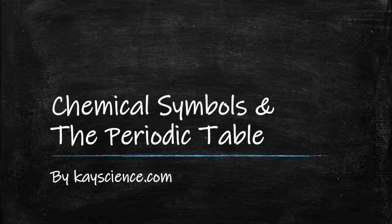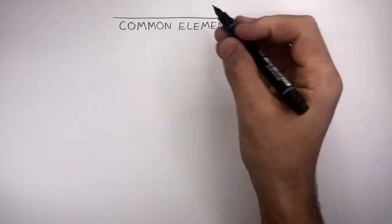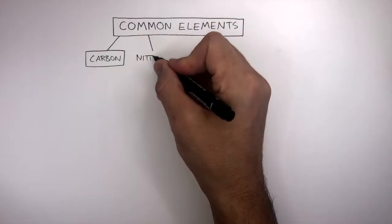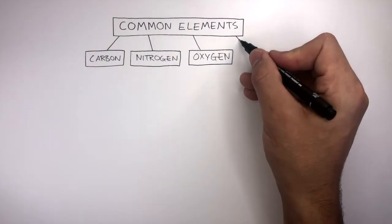Chemical Symbols and the Periodic Table by KScience.com. An element is a substance made of one type of atom. Common elements that the majority of people know are carbon, nitrogen, oxygen and chlorine.